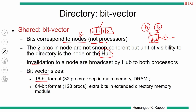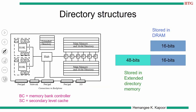The bit vectors are stored in two partitions: a 16-bit format stored with the DRAM (in the memory bank controllers), and if a full 64-bit vector is needed, the extra 48 bits are stored in an external directory memory. In this way, 64 bits total are maintained — 16 bits with the DRAM and the remaining bits in external storage.